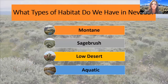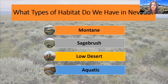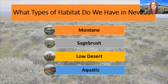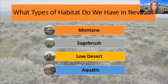What types of habitat do we have here in Nevada? In the state of Nevada, we like to break it down into four main habitat types. The first one is the montane habitat, characterized by mountains and higher elevations. This is typically where we find our pine trees — trees with pine cones and pine needles — and colder elevations. A good example of this would be the Ruby Mountains out here in the eastern side of the state, with peaks that reach around 10,000 feet.